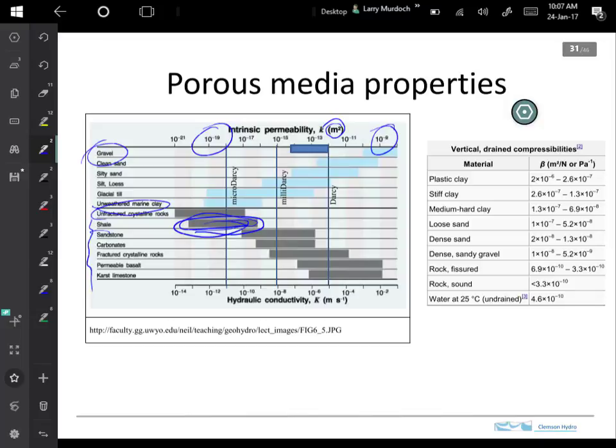So the other thing, last thing is compressibility, and we need compressibility for the storage term in the governing equation in the mass conservation. We will need a compressibility for the fluid and we need a compressibility for the aquifer, for the solid materials. And here are some numbers for these, here's water that's the SI units in one over Pascal.